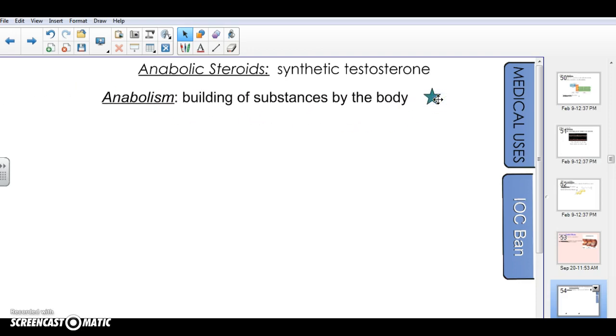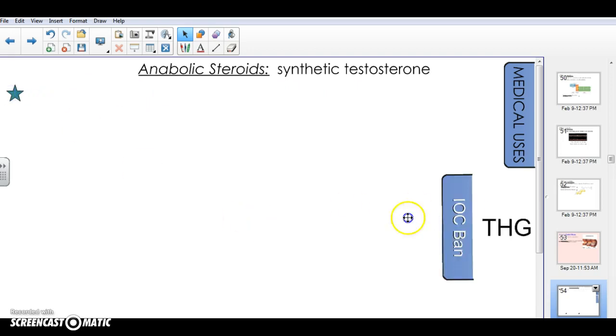Please remember that anabolism is when you build substances up in the body. So anabolic steroids will build up muscle tissue. The International Olympic Committee has banned many of these substances, specifically THG, a growth hormone and type of anabolic steroid. There's a lot of sporting communities that have been seriously looking at these health bans in the past few years.